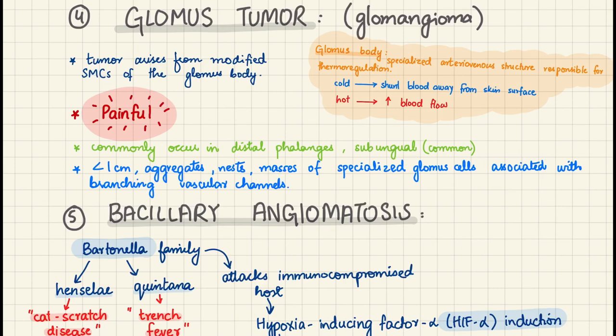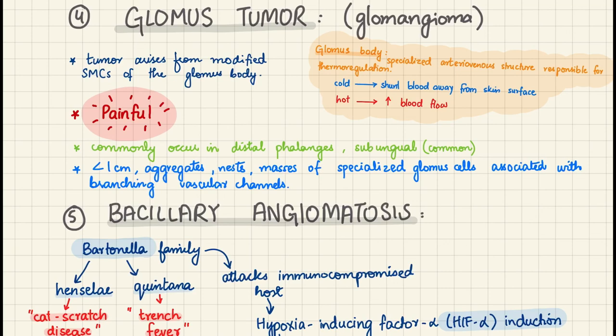In glomus tumor, the tumor arises from the modified smooth muscle cells of the glomus body. It is characteristically very painful and occurs in the distal phalanges, and can also occur sub-ungually, meaning below the nails. Morphologically, these are less than one centimeter aggregates of nests or masses of specialized glomus cells associated with branching vascular channels.